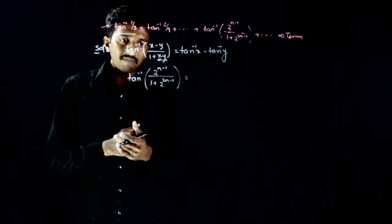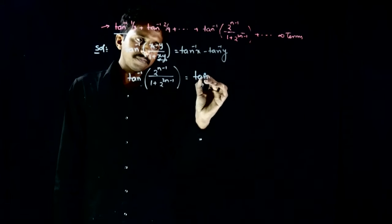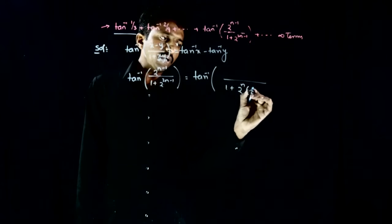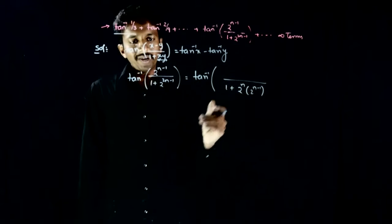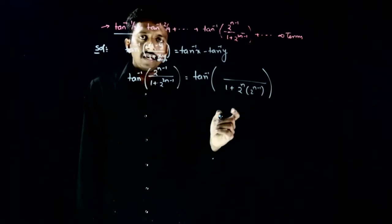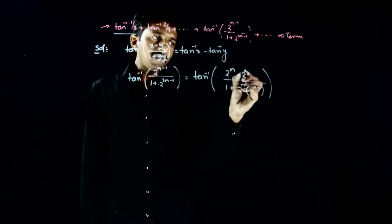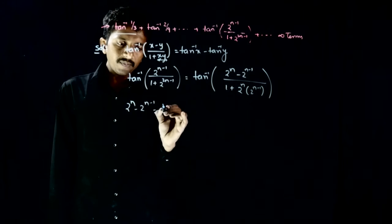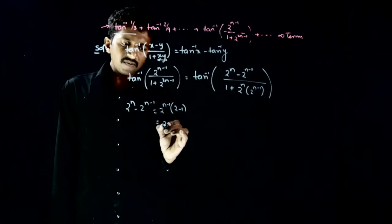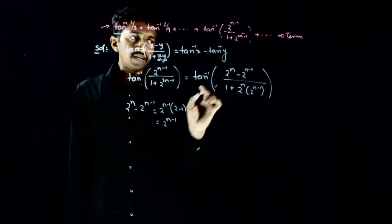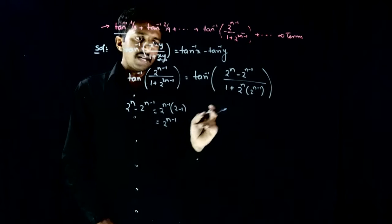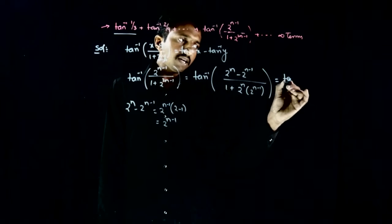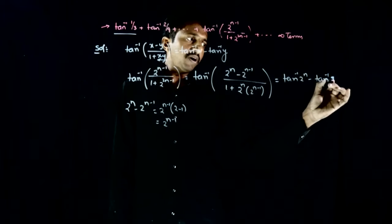You have to do trial and error — try to manipulate and get something like this. So for the general term tan inverse of 2^(n-1) / (1 + 2^(2n-1)): in the denominator, 1 + 2^(2n-1) can be written as 2^n × 2^(n-1). And in the numerator, 2^(n-1) is the same as 2^n minus 2^(n-1) — check: taking 2^(n-1) common gives 2^(n-1)(2−1) = 2^(n-1). So this is now in the form tan inverse of (x−y)/(1+xy), which equals tan inverse of 2^n minus tan inverse of 2^(n-1).